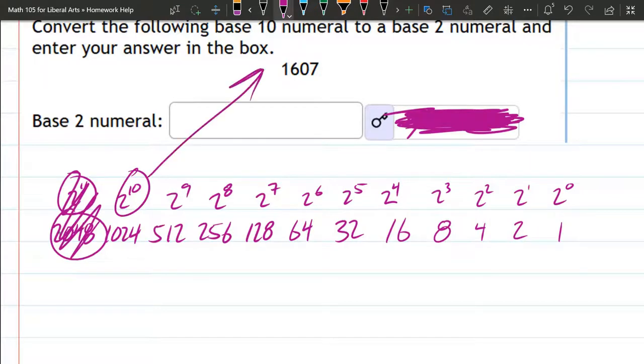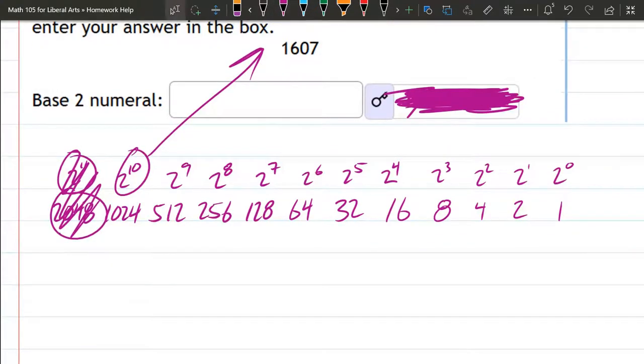How many 2^10s live in this number? Now, the quick answer to any of these questions is either 0 of them or 1 of them, because we're in base 2. You can't have 2 of them. So just looking, 1024, there's 1 1024 in this number. We're going to take 1024 out by subtracting. 1607 minus 1024. We can carry digits. 1607 minus 1024 is 583. Okay, so we have 1 of these in the number.